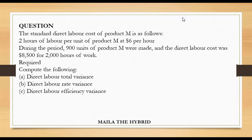During the period, 900 units of product M were made, and the direct labor cost was $8,500 for 2,000 hours of work. So we are given the actual labor cost and the actual hours worked.